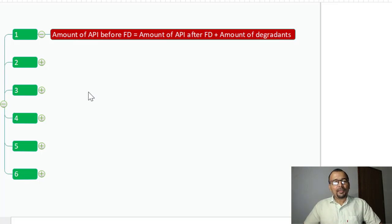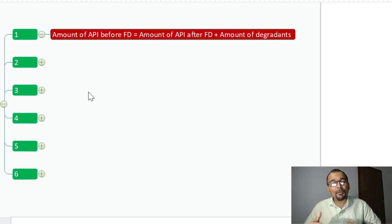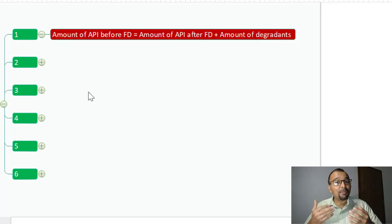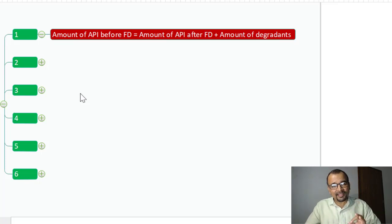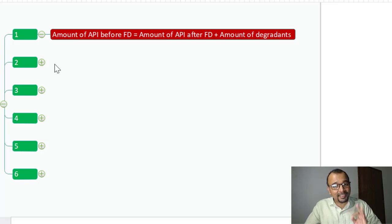The formula is: amount of API before force degradation equals amount of API after force degradation plus amount of degradants. As we expect the API to undergo degradation, the additional amount of degradants will also become part of the sample once you conduct the force degradation study. The ground reality is that the amount before must equal the amount after plus the amount of degradants.